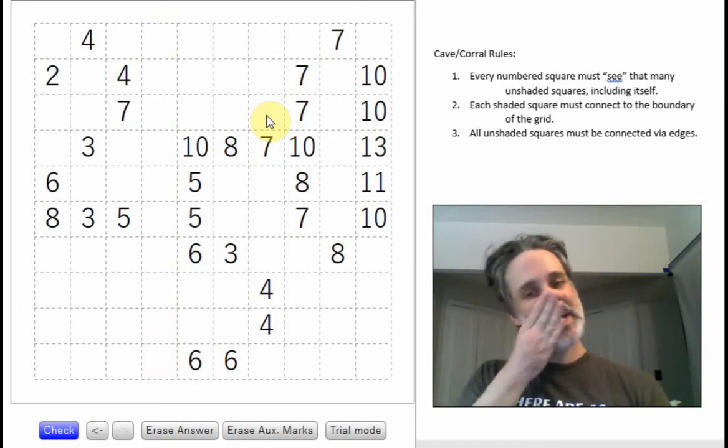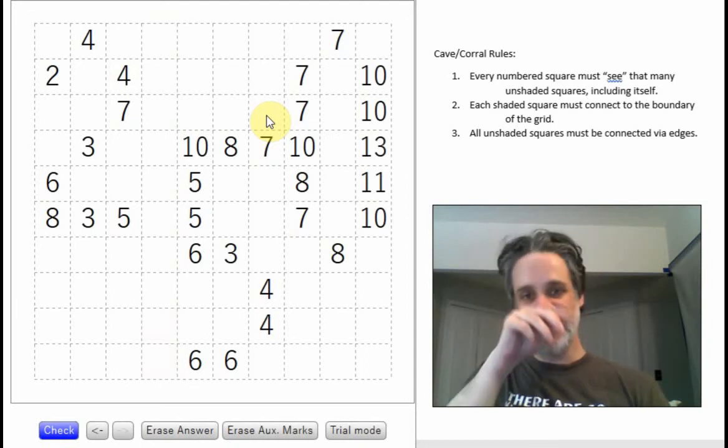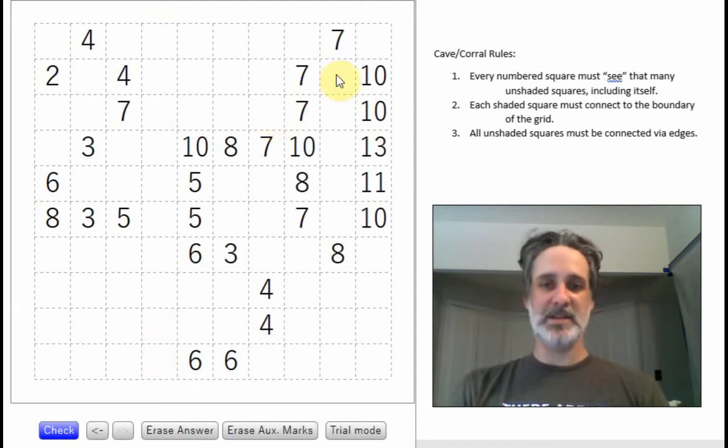Okay, so that should be enough to get us started on here with some deductions. Now, sometimes corral or cave is presented as a loop puzzle. It actually is presented as a loop puzzle. You have to fill in the loop so that the inner squares and the outer squares are separated. That's how you know it's solved. But in competitions, if you just shade stuff, the judges will be totally fine with that as well.